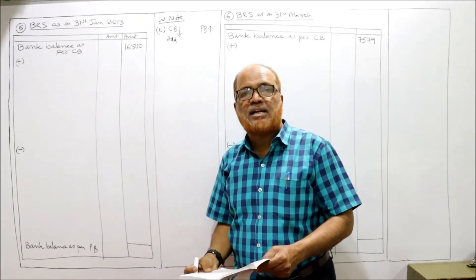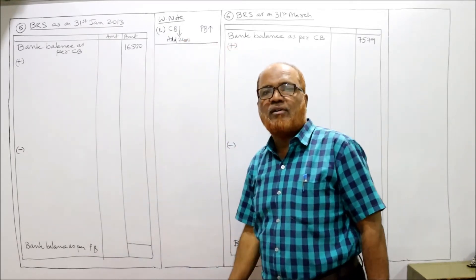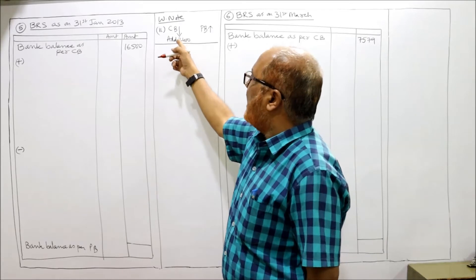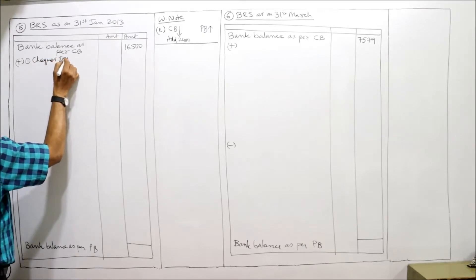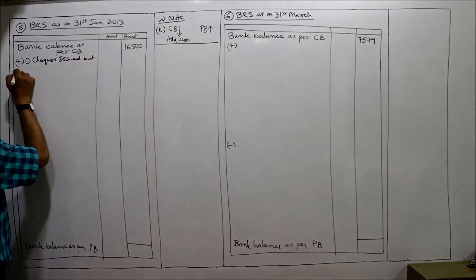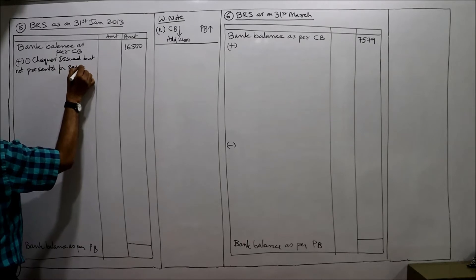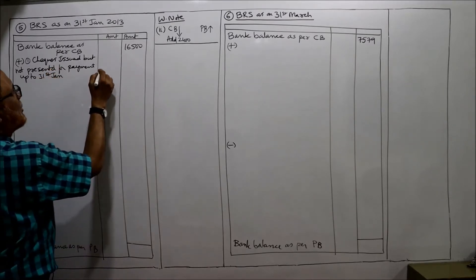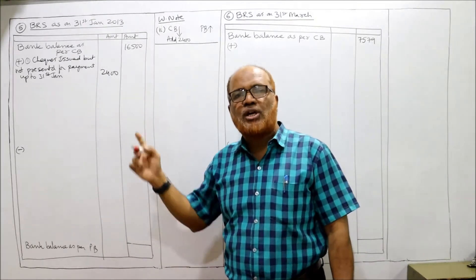Checks of 2400 were presented in February, so on 31st January they were not yet presented. We add this as: checks issued but not presented for payment up to 31st January — rupees 2400. Second item completed.